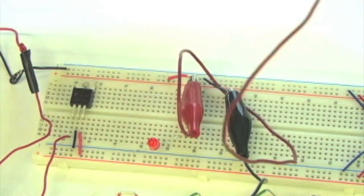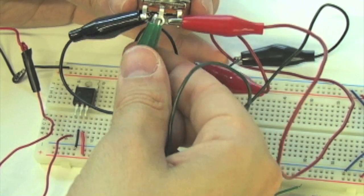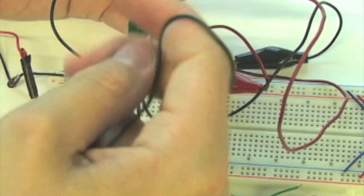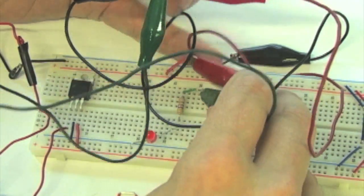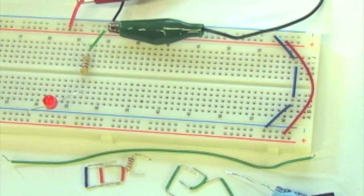Connect the other ends of these clips to the outer pins of the potentiometer. Now, connect a third, differently colored alligator clip to the middle pin of the potentiometer. Using another short wire, connect the other end of this clip to the resistor. If your power isn't switched on already, switch it on now.